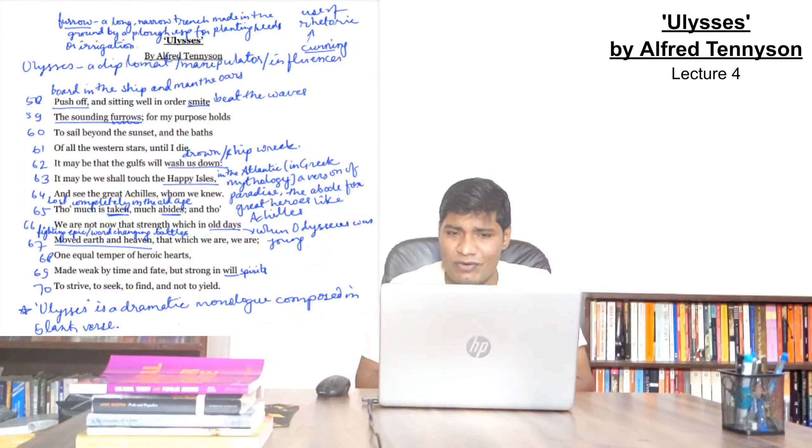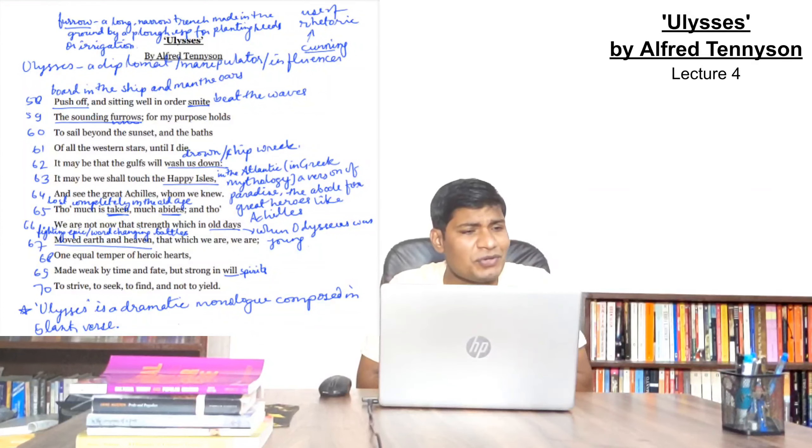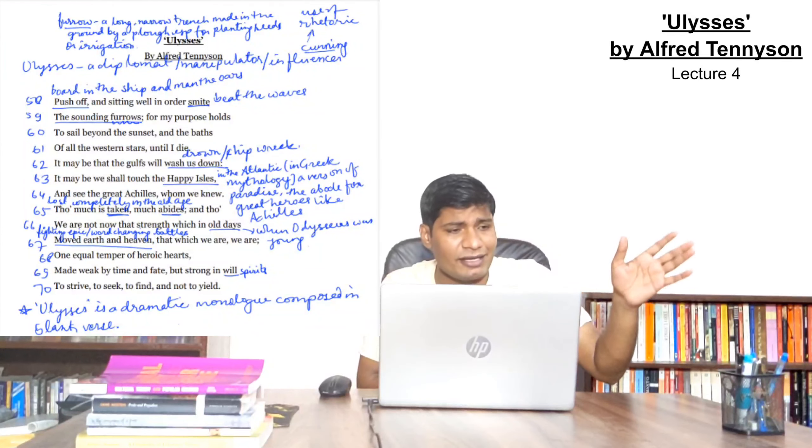All these followers, all these friends of Ulysses or Odysseus, they have boarded into the ship and they are going to man the oars. Now they are going to start their journey. And sitting well in order and they have already found their place. They are at right place. Who is to steer the ship? Who is to sail the ship? And who is to lead the ship? All things are in order. And the word order is very important.